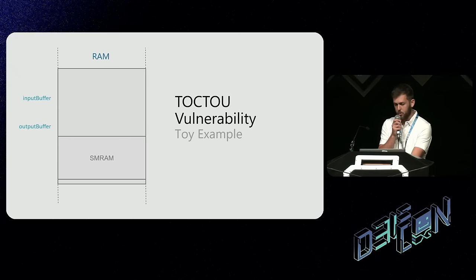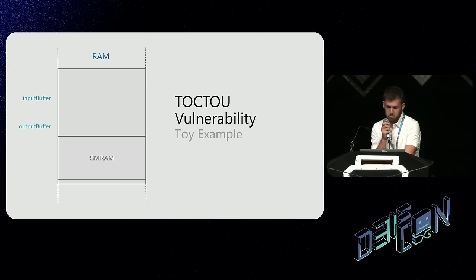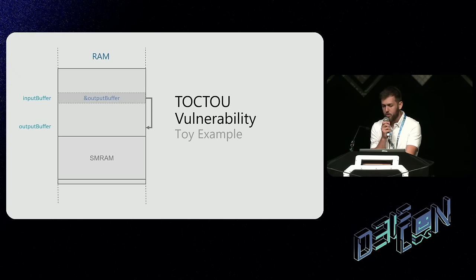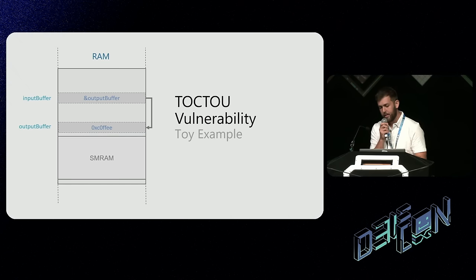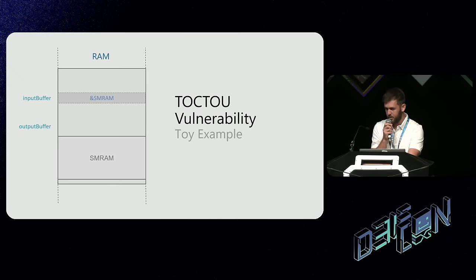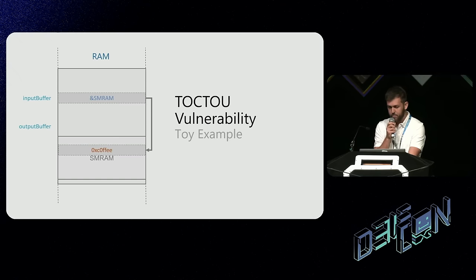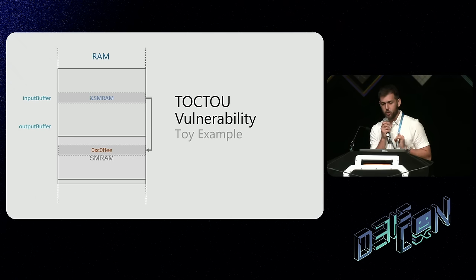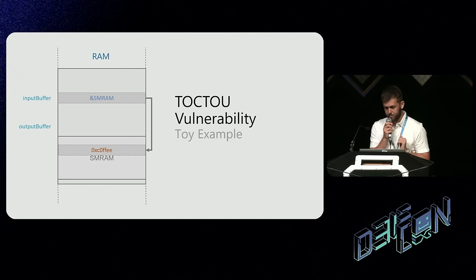In the normal scenario, we have an input buffer leading to OS-owned memory and the SMI handler simply overrides it with the value of 'coffee.' However, an attacker may try to modify this output buffer to point to SMRAM in between the time of check and time of use, thereby gaining a write primitive of the value 'coffee' to SMRAM. This is exactly what the validation function prevents — it makes sure the output buffer is not located inside SMRAM.